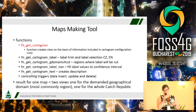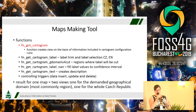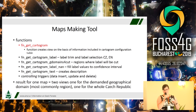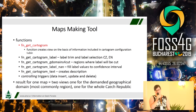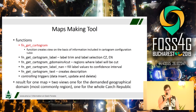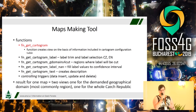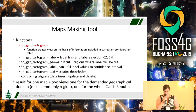The most important function is the red one. This function creates a new view from data that were stored in the configuration table. The result of this function are two views: one for the whole Czech Republic and one for the desired region, regions, or geographical domain.